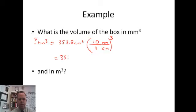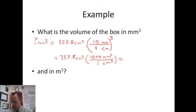So if I were to rewrite this, 353.8 centimeters cubed. 10 cubed is 1,000. 1 cubed is 1. Then I can solve 353.8 times 1,000. Now we get 353,800 millimeters cubed.